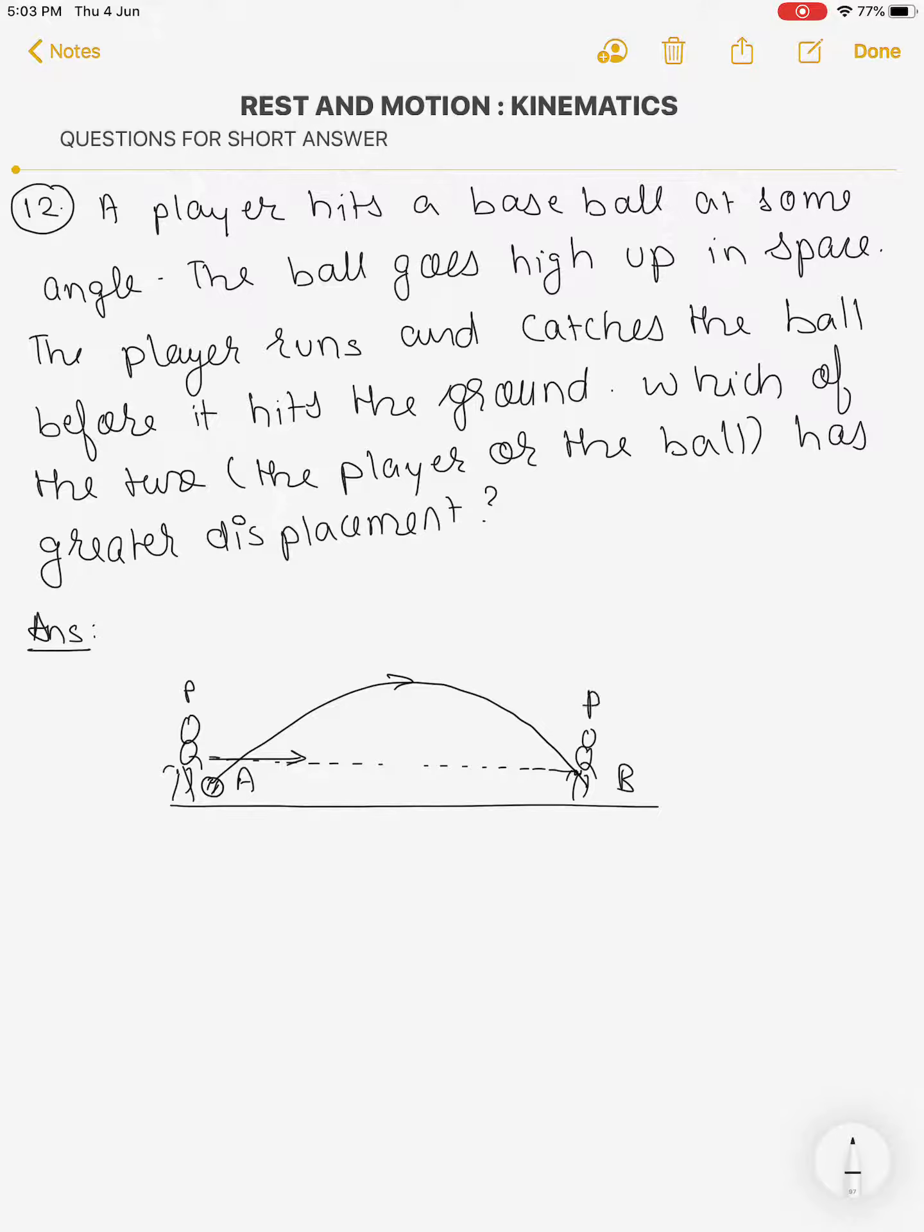So if you see for the player, what is displacement? The shortest distance between initial point to final point. This is displacement for player. And for the ball, initial point and final point is same as that of the player, so the ball will also have same displacement.